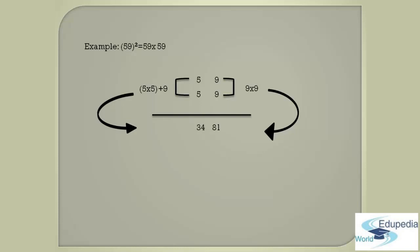Now, if you club both these two products together, it becomes the answer for 59 squared. So therefore, 59 squared is equal to 3481.